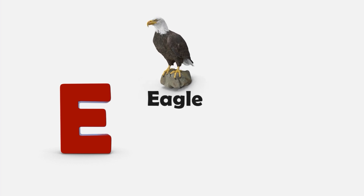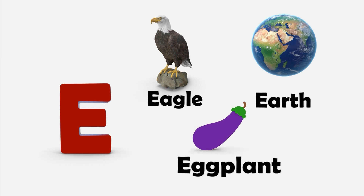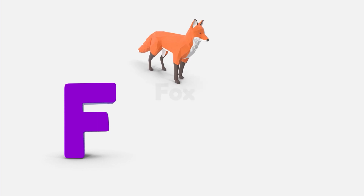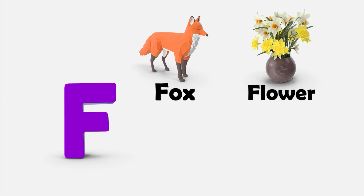E — E is for Eagle. E is for Earth. And E is for Eggplant. F — F is for Fox. F is for Flower. F is for Food.